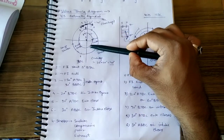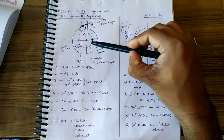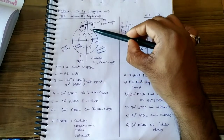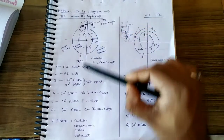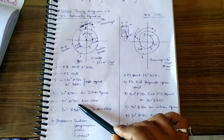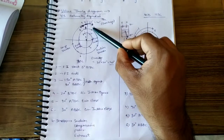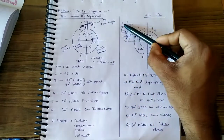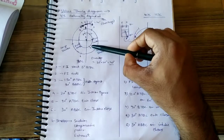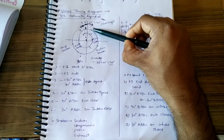The exhaust valve opens at point three and will close at the fifth position, which is 20 degrees after TDC. So the exhaust valve opens here before BDC and closes 20 degrees after TDC.